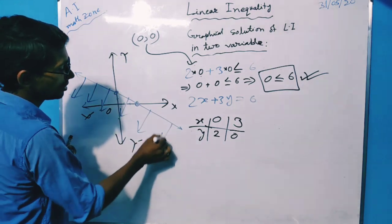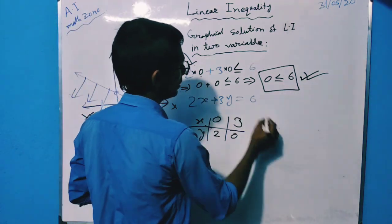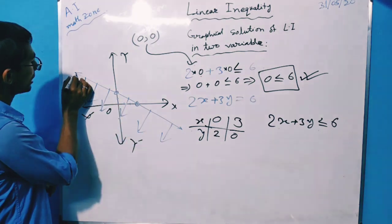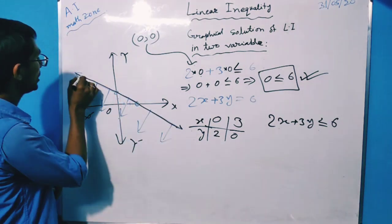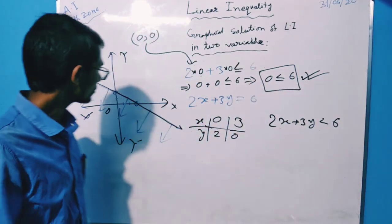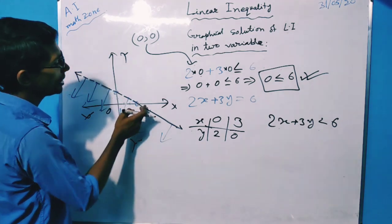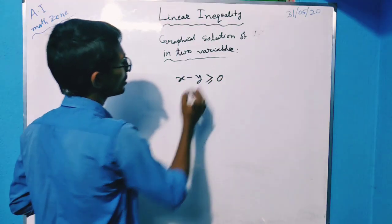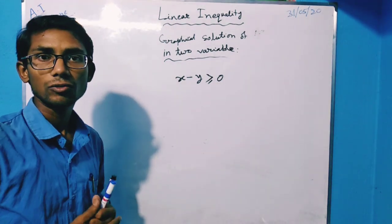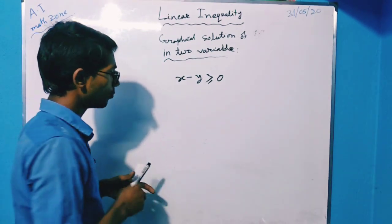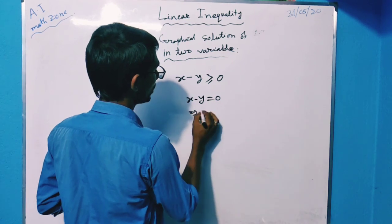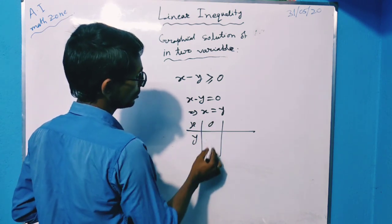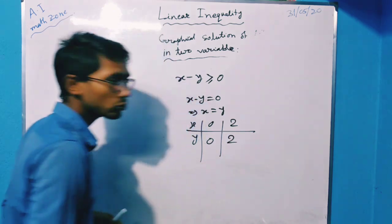So this is the solution region for the given linear inequality 2x plus 3y is less than or equals to 6. Since there is an equality sign, this line will be a bold solid line. If there were no equality sign, the line would be a dotted line. Now, another linear inequality is given: x minus y is greater than or equals to 0. The equivalent equation is x minus y equals 0, which implies x equals y. If we take x equals 0, then y equals 0; if we take x equals 2, then y equals 2.